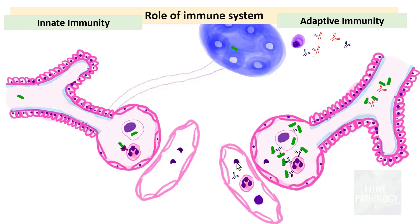Whenever there are defects in neutrophils or macrophages, there is increased susceptibility to infections. Similarly, when there is immunodeficiency — absence of IgA, IgG, or IgM antibodies — there is also increased susceptibility to develop infections.